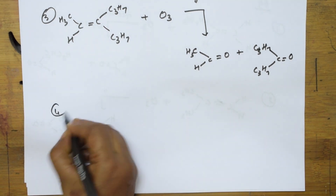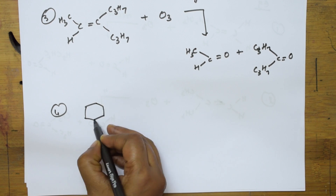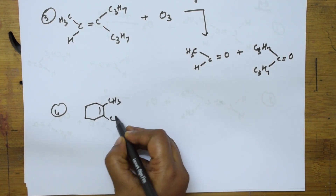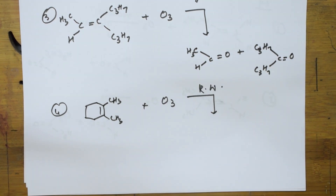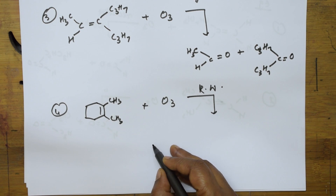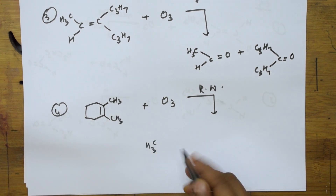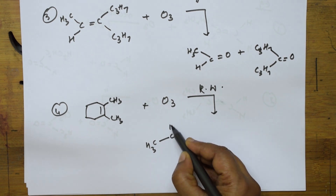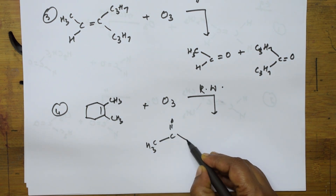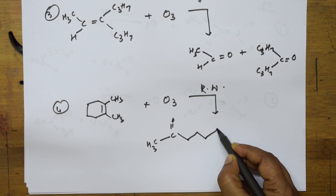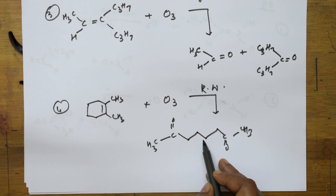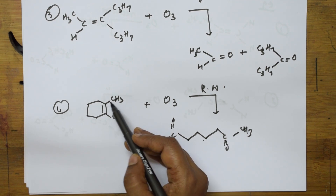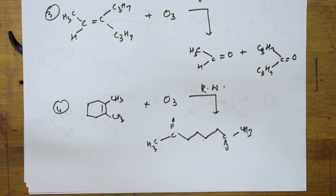Fourth example: suppose this compound is given to you. You need to do ozonolysis — same thing, reductive workup. Opening up the chain, I get CH3 here. Counting through the chain: this is the product.